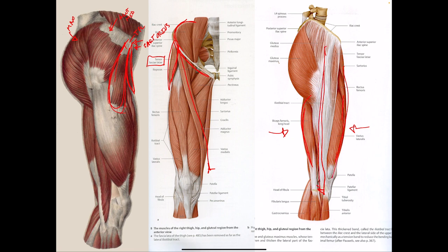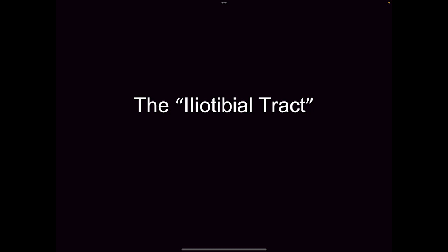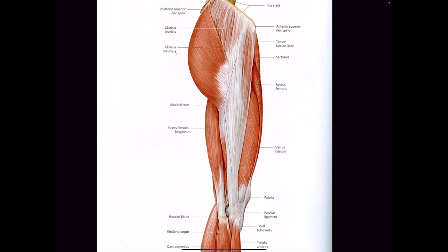This muscle that runs right down the middle is called the iliotibial tract, or the IT band. It has two names — I don't really care what you call it. IT is iliotibial; tract is just another word for the band. This band is a fascinating muscle — if you look at it, it is not actual muscle tissue, it is fibrous tissue, and it is very, very strong.